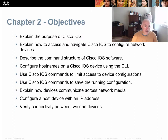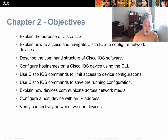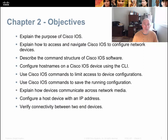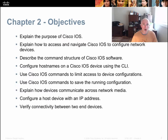The goals or objectives for this training are to have students be able to explain the purpose of Cisco IOS, explain how to access and navigate Cisco IOS to configure network devices, describe the command structure of Cisco IOS software, configure host names on a Cisco IOS device using the CLI, use Cisco IOS commands to limit access to device configurations, save the running configuration, explain how devices communicate across network media, configure a host device with an IP address, and verify that the two end devices are connected and communicating.